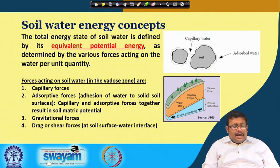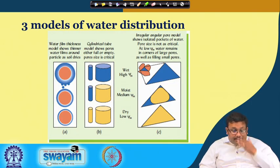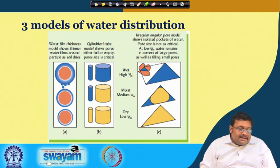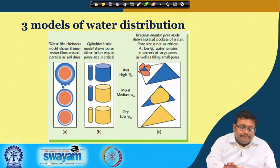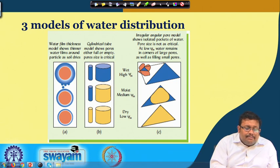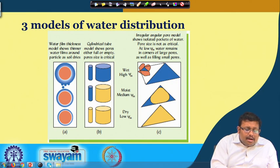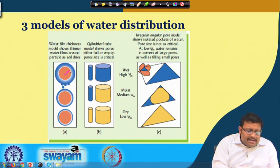Let us see what are the three models of water distribution. The first model is called the water film thickness model and it shows basically the thinner water films around particles — when these are the particles.